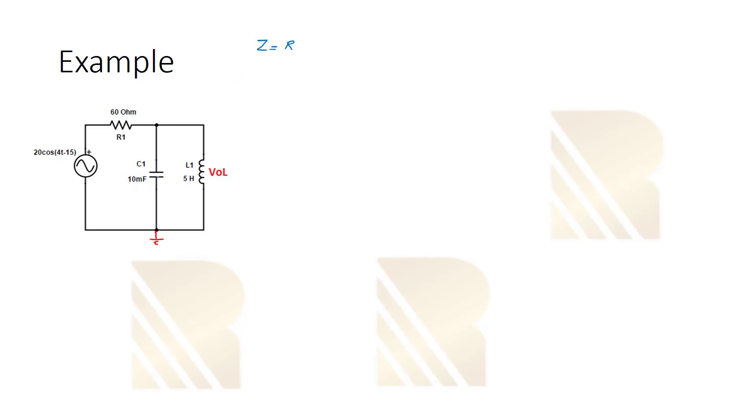What about the other impedance, the impedance for capacitance? As we talked before, ZC is equal to 1 over j C omega. So omega here is our frequency. What is omega? As you see it's four. We showed previously the input should be like this: A cosine omega T plus phi. This is the phase. So omega is four here.